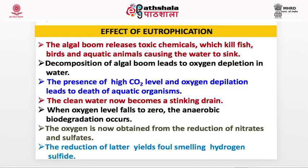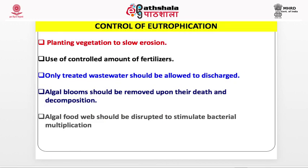Effects of eutrophication: The algal bloom releases toxic chemicals which kill fish, birds, and aquatic animals, causing the water to stink. Decomposition of the algal bloom leads to oxygen depletion in water. The presence of high CO2 levels and oxygen depletion leads to death of aquatic organisms. The clean water becomes a stagnant drain. When oxygen level falls to zero, anaerobic biodegradation occurs. Oxygen is then obtained from the reduction of nitrates and sulfates; reduction of the latter yields foul-smelling hydrogen sulfide. Controls: planting vegetation to slow erosion, use of controlled amounts of fertilizers, allowing only treated wastewater to discharge, and removing algal blooms upon their death and decomposition.